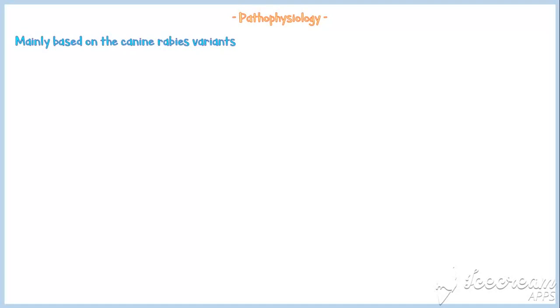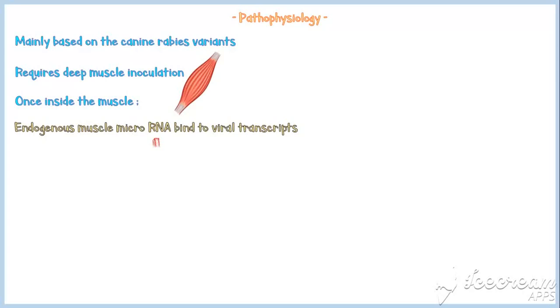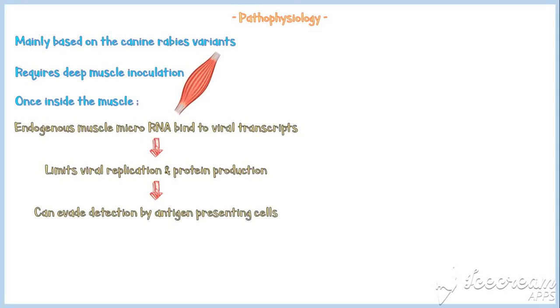Let's discuss the pathophysiology of rabies. Currently understood pathophysiology is mainly based on studies of canine rabies variants. Canine rabies in humans requires deep muscle inoculation. Once inside the muscle, endogenous muscle micro-RNA bind to viral transcripts and limit viral replication and protein production, so that the virus can evade detection by antigen-presenting cells such as macrophages.